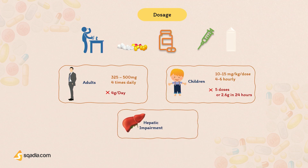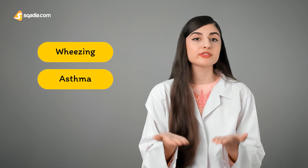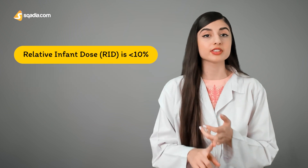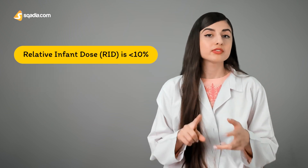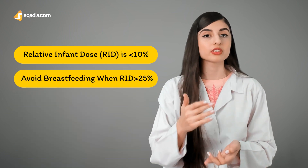In the case of hepatic impairment, acetaminophen should be avoided as much as possible, or if used, therapy should be limited to short-term use at doses not exceeding 2 grams per day. Normal doses during pregnancy are not associated with an increased risk of miscarriage or stillbirth; however, maternal overdose may increase fetal death or spontaneous abortion if treatment is delayed. Wheezing and asthma in early childhood is also associated with frequent maternal use during pregnancy. Acetaminophen is excreted in milk; breastfeeding is accepted if the relative infant dose is less than 10%, but must be avoided when this dose increases to more than 25%.